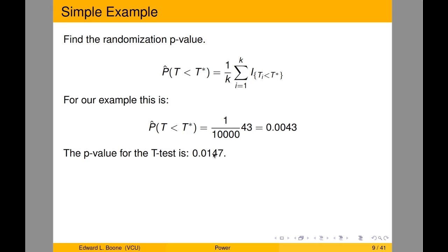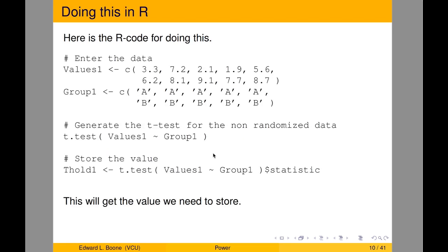Everybody should get a different answer when they run this. To do this in R, we manually enter the data — the same values as before — with groupings A, A, A, B, B, B. We use the t.test function with values against the group. To store the statistic, I call it t_hold1, using t.test with dollar sign statistic to extract the actual test statistic value.